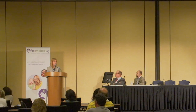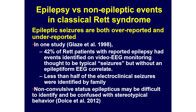In one older study from 1998, a group of girls with Rett syndrome underwent video EEG monitoring. Of those with reported epilepsy, 42% had events during monitoring thought to be their typical seizures but had no EEG correlate — so electrographically they didn't look like seizures. Conversely, less than half of the electroclinical seizures — those we see on the EEG — were recognized by the family. So in both directions, it's a challenge. Also be aware of non-convulsive status epilepticus, which can be difficult to identify and confused with Rett spells or other stereotypical behaviors.